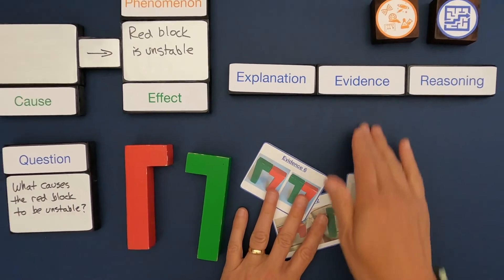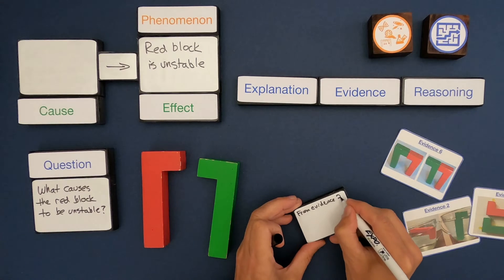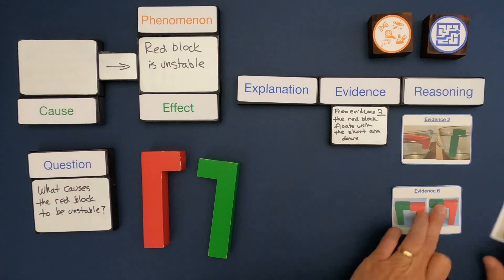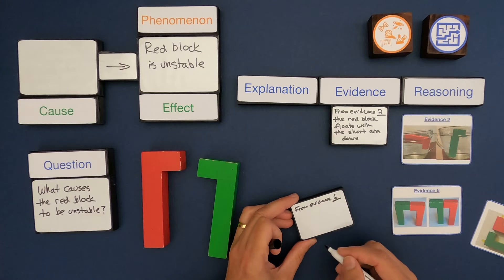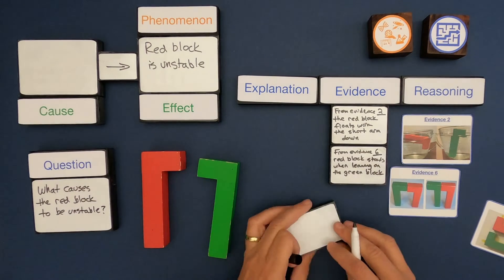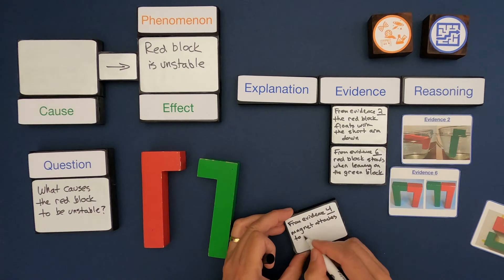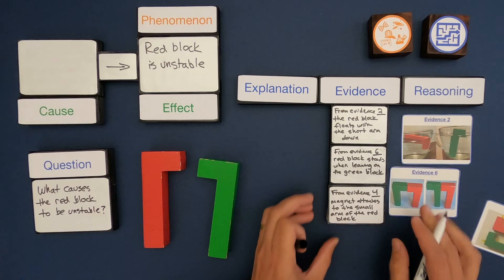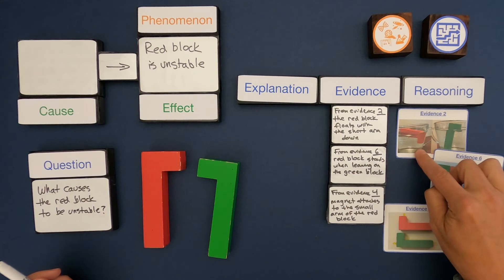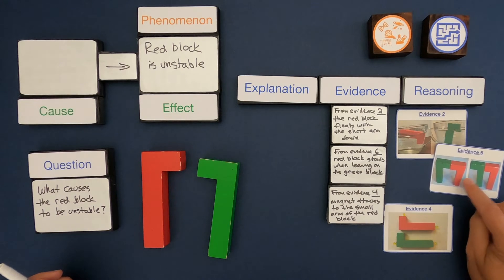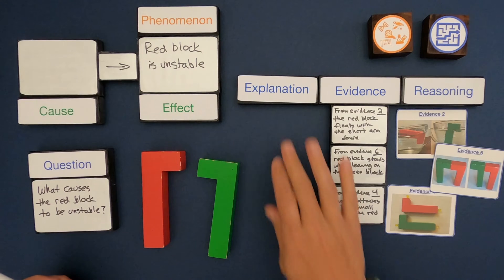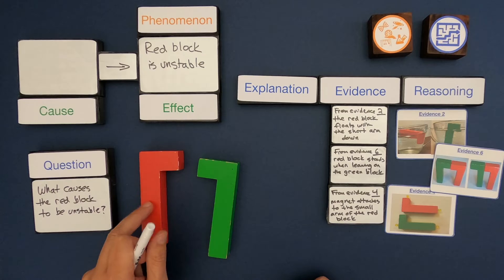The next thing I want to do is organize. I've summarized by saying that since they float differently, especially from evidence, the red block with its short arm down. Also the idea that the red block can lean on the other, and also there's some difference here in this arm that the magnet can stick there. So now I think I have an explanation, a cause for the instability of red.